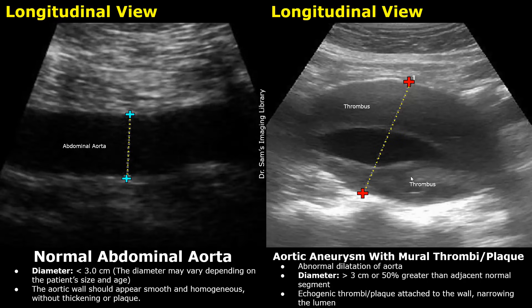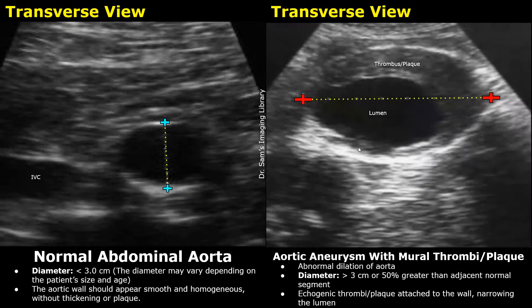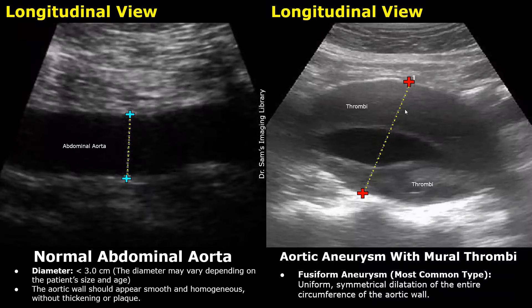The lumen is very narrow in this case. This anechoic area is the lumen. Here is an image in transverse view showing an aneurysm with a thrombus or plaque narrowing the aortic lumen. A plaque and a thrombus can appear similar on ultrasound. Most aneurysms are fusiform aneurysms — there is a symmetrical dilatation of the entire circumference of the aorta. It is the most common type.